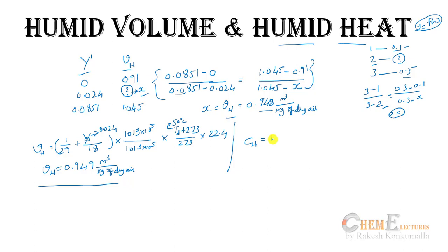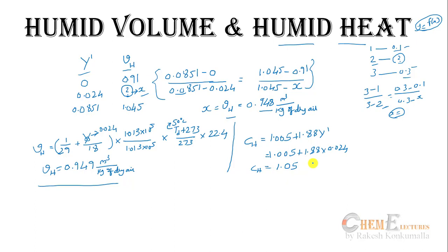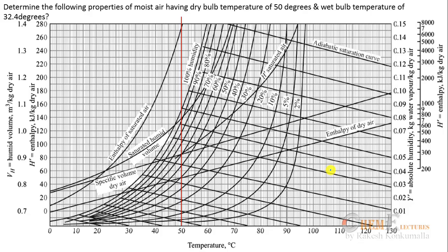Humid heat C_s = 1.005 + 1.88 × Y'. Substituting Y' = 0.024: C_s = 1.005 + 1.88 × 0.024 = 1.05 kJ per kg of dry air per Kelvin.